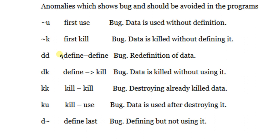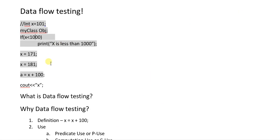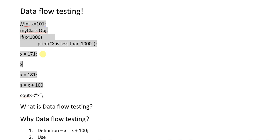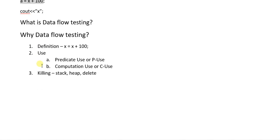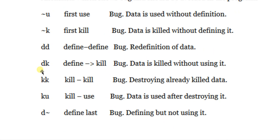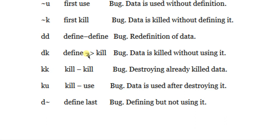Define-define (DD) means if we define the variable and do not use it, then define it again, that is also a logical mistake. For example, if we define X and then define it again as X = 181, this new value will be used but the previous value will never be used. So defining a variable twice without using it in between is a bug.